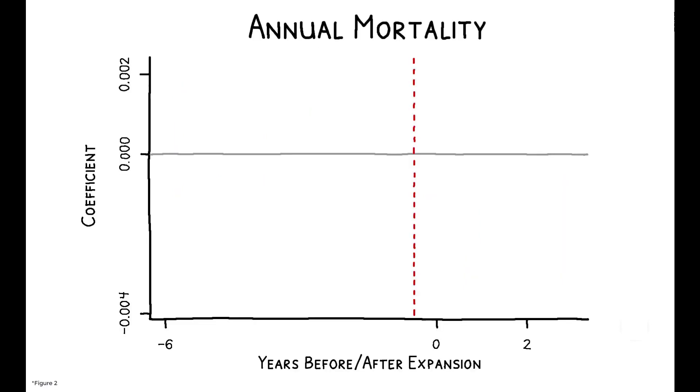This figure answers that central question. Expanding insurance coverage for this low-income population led to a marked decline in mortality rates. The results point to a 0.132 percentage point decline in mortality, or equivalently, a 9.4 percent reduction over the sample mean.